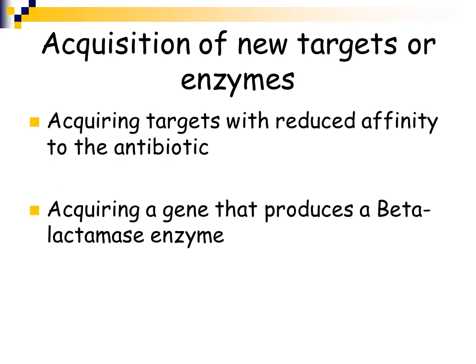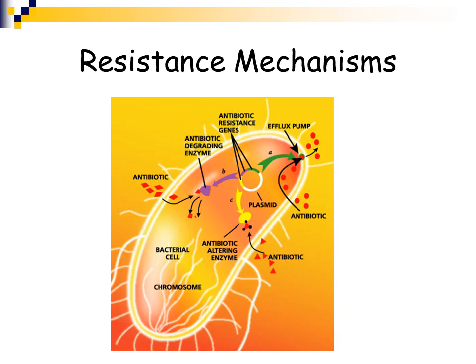Bacteria can acquire new targets or the ability to produce an enzyme when they didn't previously have that ability. Some bacteria will acquire a target that has a reduced affinity for an antibiotic so the antimicrobial agent will no longer be able to bind to it. They might also acquire a gene that allows them to produce beta-lactamase, penicillinase, or another enzyme. Here is a schematic of the various types of resistance mechanisms that bacteria have acquired over the years.